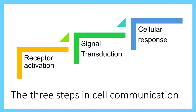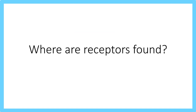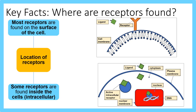Receptor activation is the first step in cell communication. The subsequent step is signal transduction, followed by cellular response. Most receptors are found on the surface of the membrane. They can also be found inside the cells — intracellularly — and this occurs if the ligand is able to bypass the plasma membrane in order to bind to the receptor and initiate the following steps.